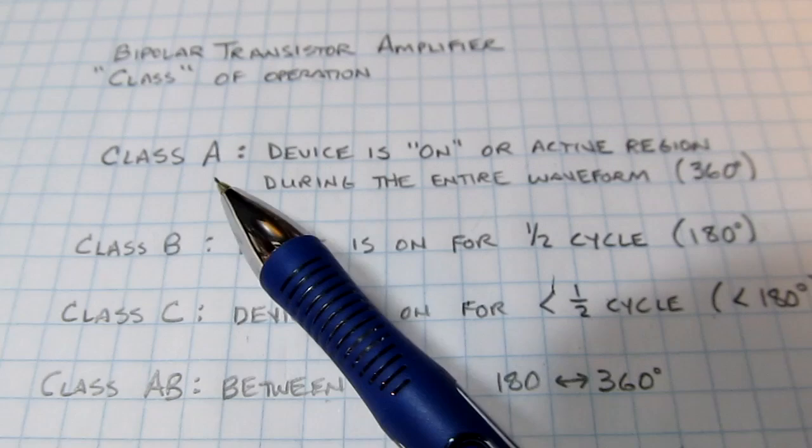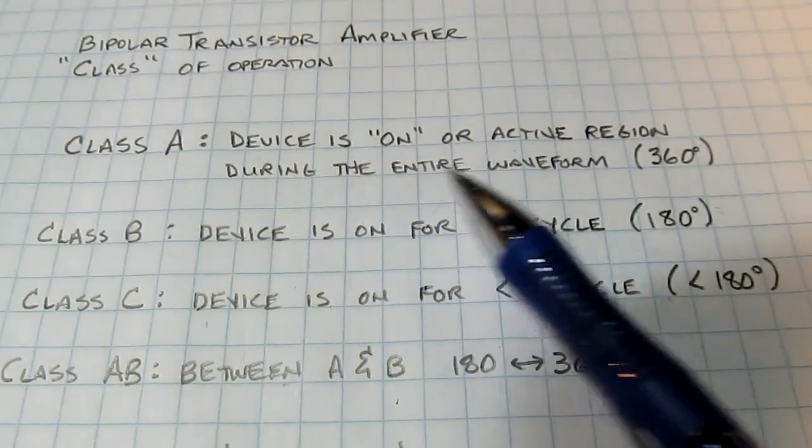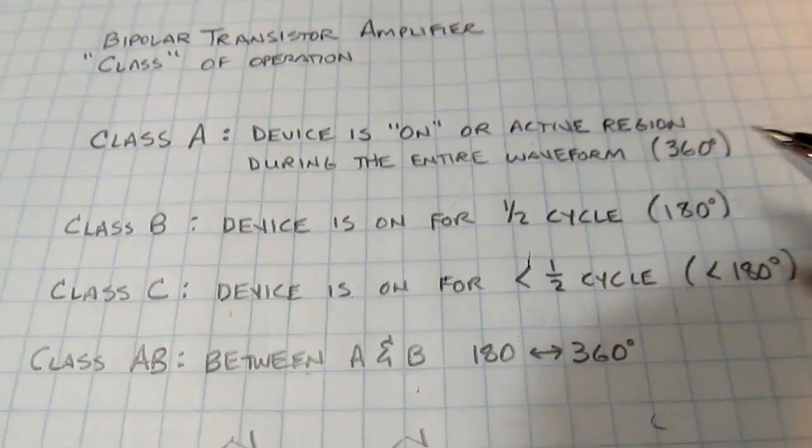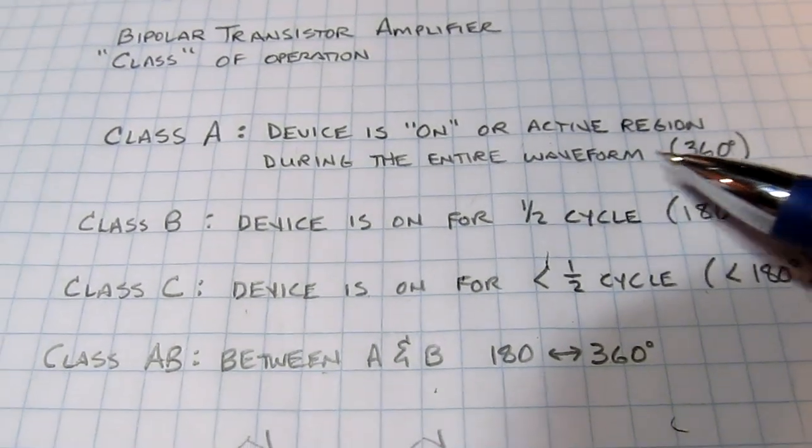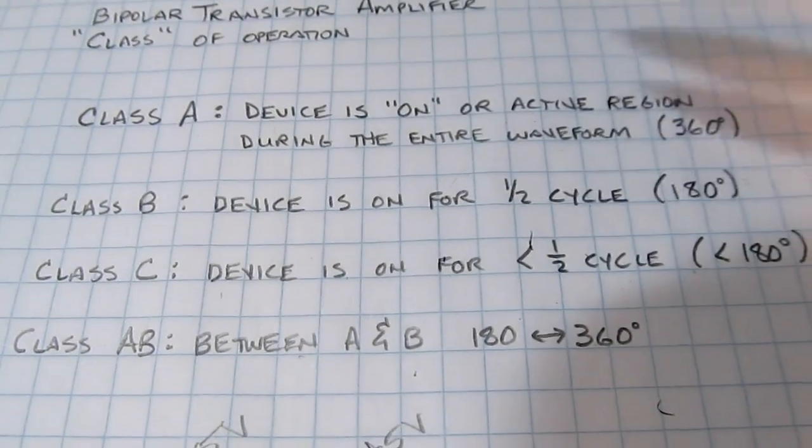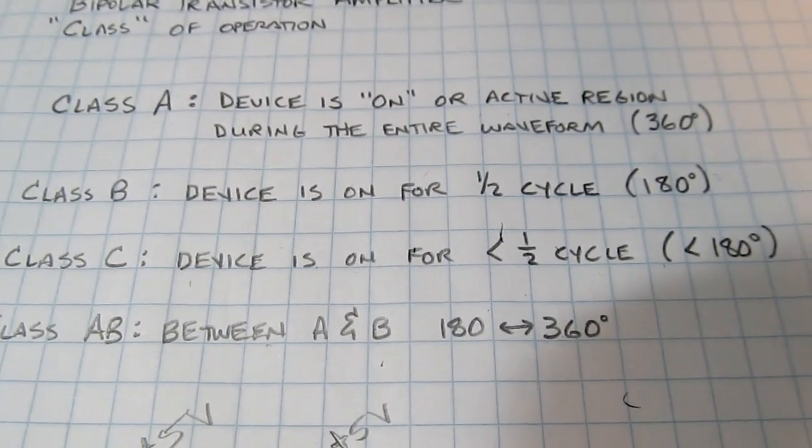Class A is essentially when the device is on or in the active region during the entire waveform. This is the most linear, it's very clean, but it also is the least efficient because the transistor is on all the time. So you have to put a lot more power into the amplifier than you get out of it. But it also gives you the cleanest waveform.